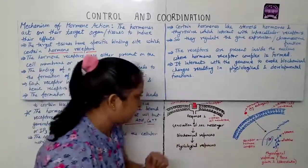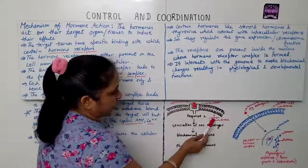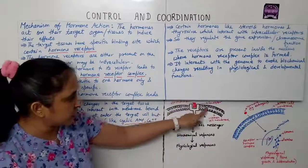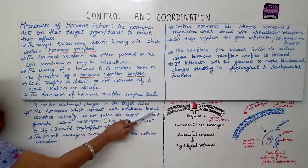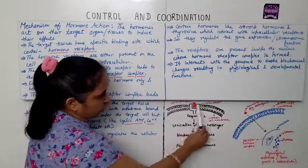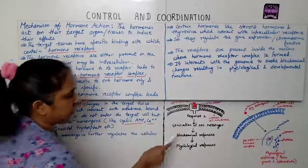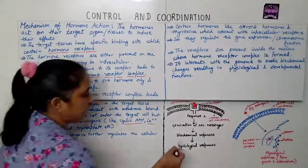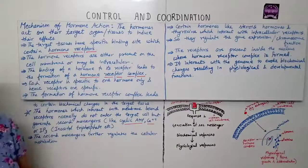Now I will explain this with a diagram. This is the cell membrane. The red color represents the hormone, and this is the receptor present on the membrane. When the hormone binds with the receptor on the membrane, it does not enter the cell — instead it generates secondary messengers. These secondary messengers bring biochemical responses, which lead to physiological responses in the cell.